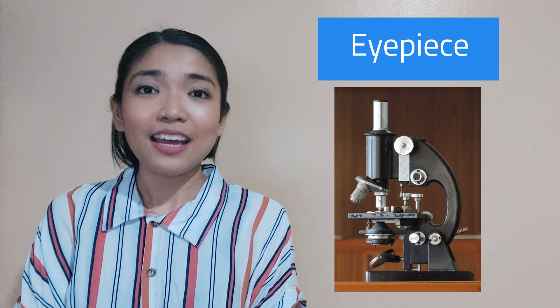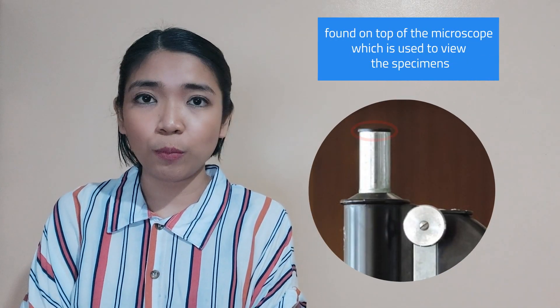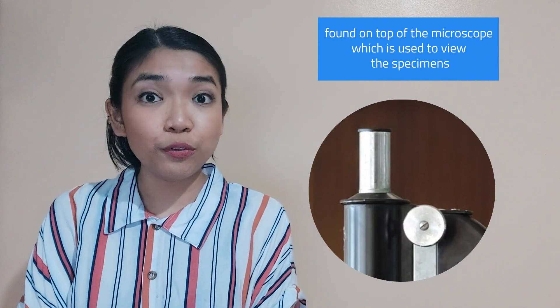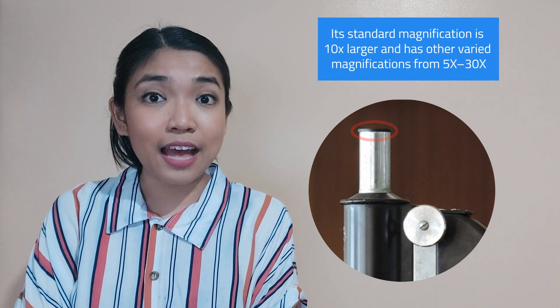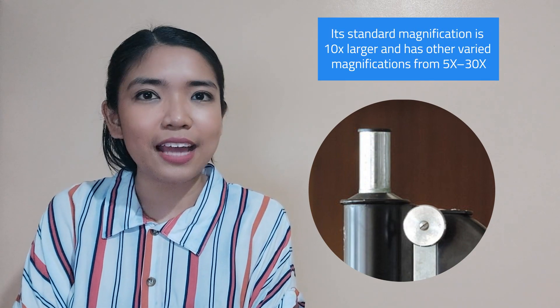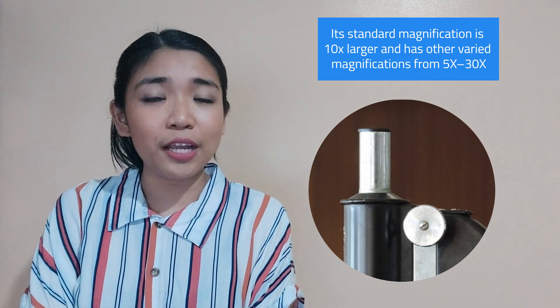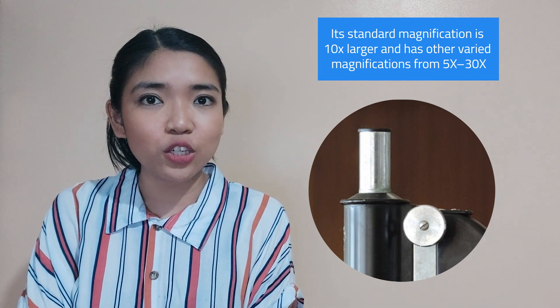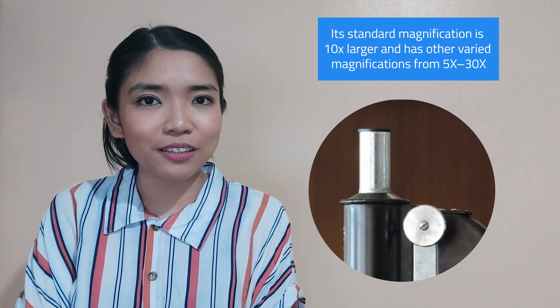It consists of the following parts. Eye piece: this is found on top of the microscope used to view the specimens. Its standard magnification is 10 times larger and has other varied magnifications from 5 times to 30 times larger.